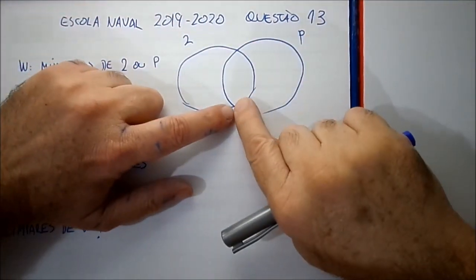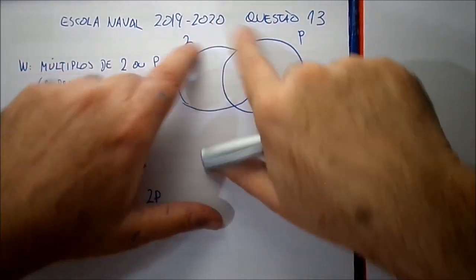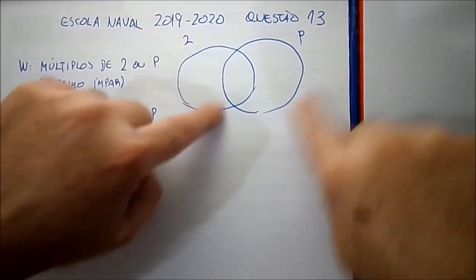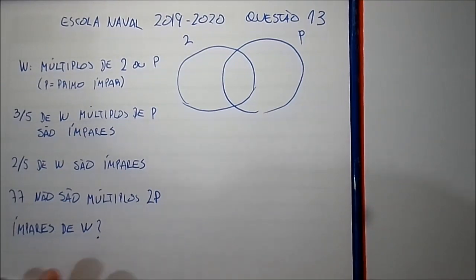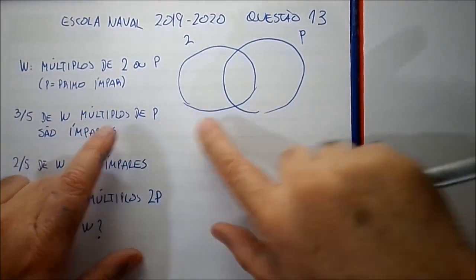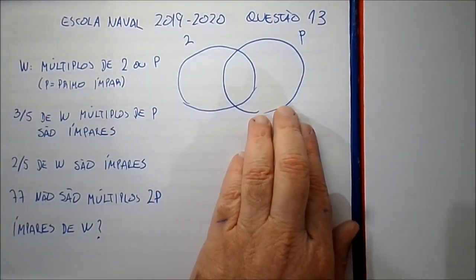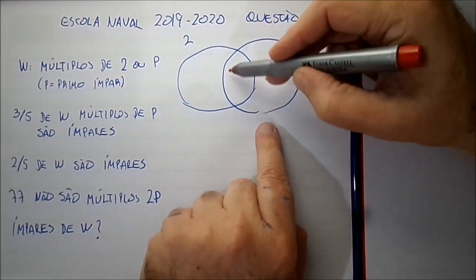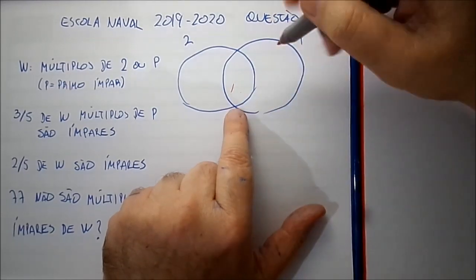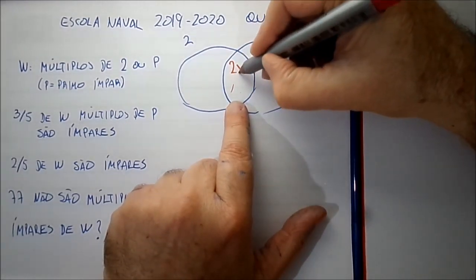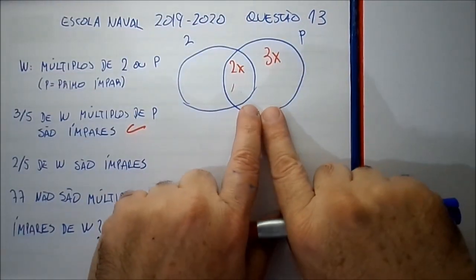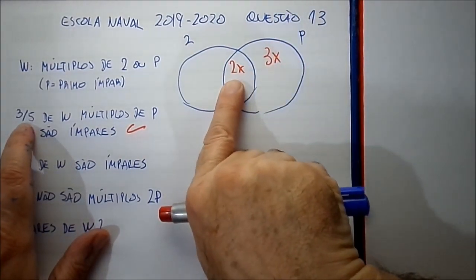Observe que em W você tem apenas esses elementos — não há em W elementos que não sejam múltiplo de 2 nem múltiplo de P. Só tem múltiplo de 2 e múltiplo de P; não tem ninguém fora desses conjuntos. Aqui está o W completo. Dos elementos de W que são múltiplos de P, 3 quintos deles são os ímpares — esses aqui. Os pares são os múltiplos de P que também são múltiplos de 2, na interseção. Então podemos chamar essa parte de 3x e essa parte de 2x, obedecendo essa condição.